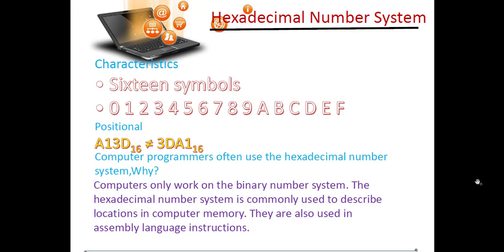We take the first 10 symbols from the decimal number system: 0, 1, 2, 3, 4, 5, 6, 7, 8, and 9. For the remaining 6 symbols, we take the first 6 letters of the English alphabet: A, B, C, D, E, and F. These 6 are added to the hexadecimal number system, giving us 16 symbols in total — from 0 to 9 and from A to F.